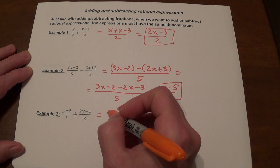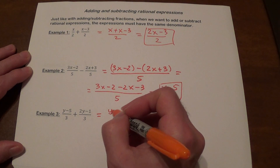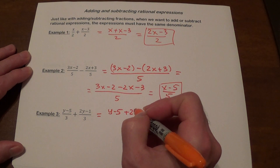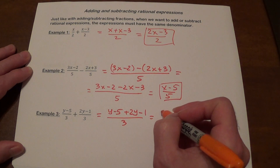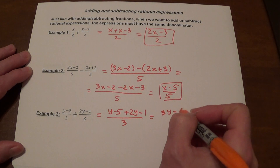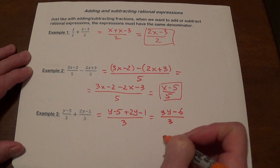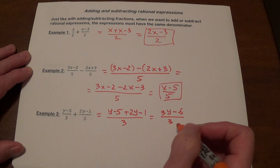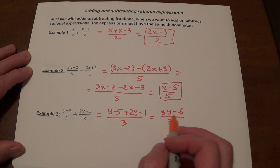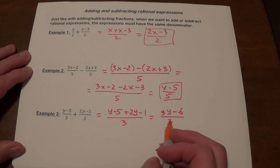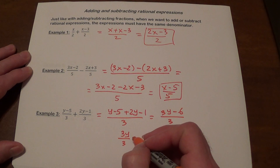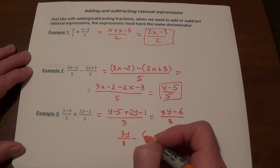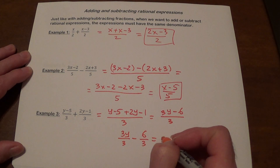This one: we get 1 minus 5 plus 2y minus 1, divided by 3. That's going to give us 3y minus 6, divided by 3. In this case we can actually simplify, because both terms can be divided by what we have in the denominator. So 3y divided by 3 is y, and minus 6 divided by 3 is minus 2, giving us y minus 2.